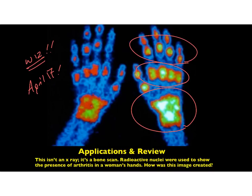This is an image — a bone scan of someone who has some pretty severe rheumatoid arthritis. And we're going to talk about how you would make such an image and what differentiates it from an x-ray going forward.